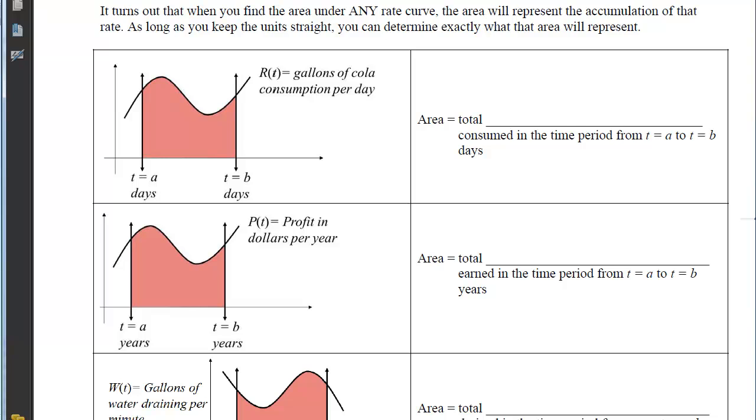So here's what's really slick. It turns out that when you find the area under any rate curve, the area will represent the accumulation of that rate. And as long as you keep the unit straight, you can determine exactly what that area will represent.